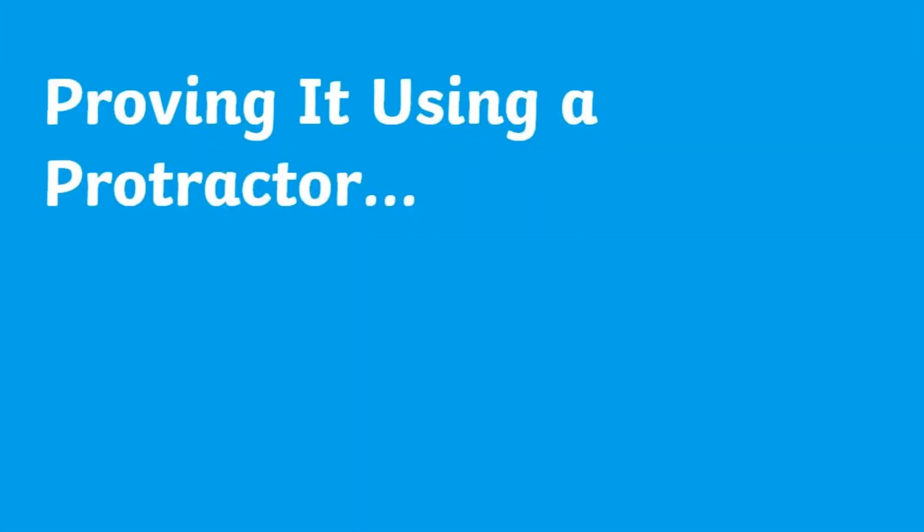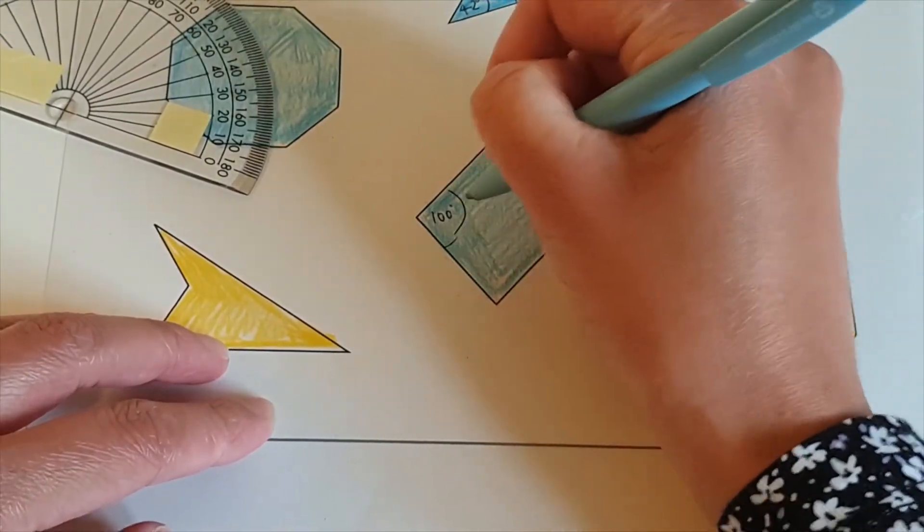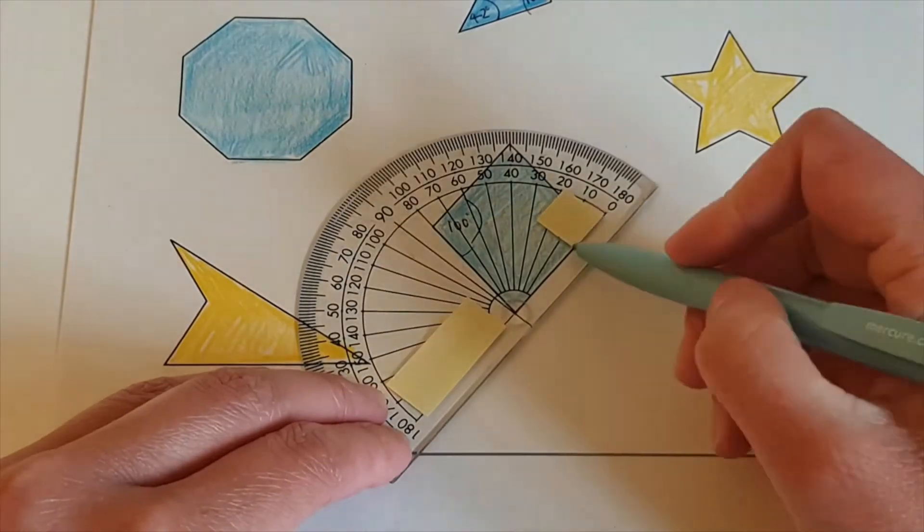You could also make this activity practical by encouraging your child or class to use a protractor to prove the answer is correct by measuring and jotting down the measurement of each angle.